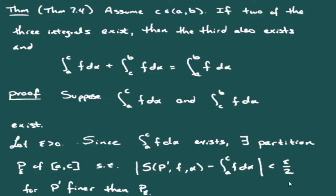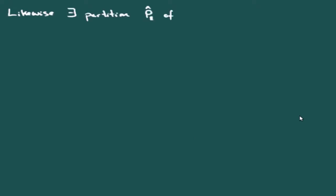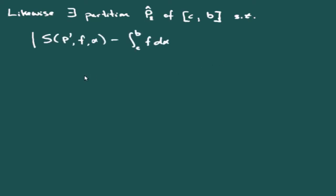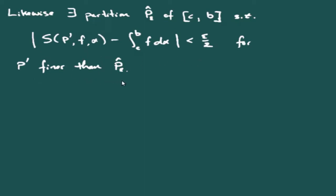Likewise, there exists a partition P̂_ε of [C, B] such that any Riemann-Stieltjes sum over a partition finer than P̂_ε differs from the integral from C to B of f dα by less than ε/2.